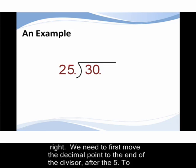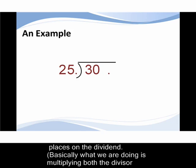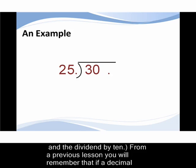We need to first move the decimal point to the end of the divisor, after the 5. To balance the equation we need to move the decimal point to the right the same number of places on the dividend. Basically what we are doing is multiplying both the divisor and the dividend by 10.